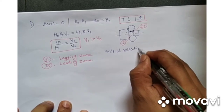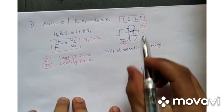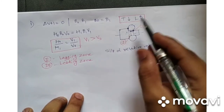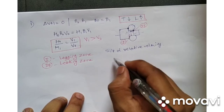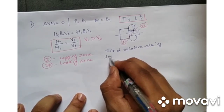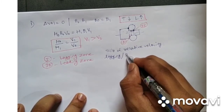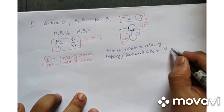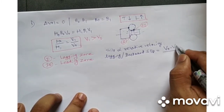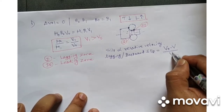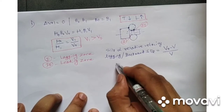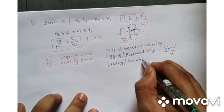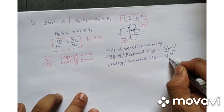Slip is directly proportional to the relative velocity. In the lagging zone, the inlet velocity V0 is less than the roller velocity V — this is called backward slip. In the leading zone, there is forward slip, where the velocity of the strip is greater than the velocity of the roller.